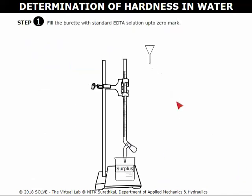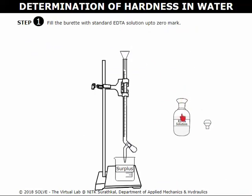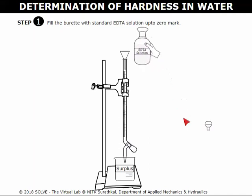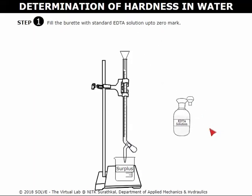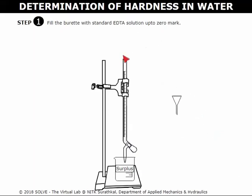Click here to place the funnel into the burette. Open the lid of EDTA solution. Click here to transfer the solution into the burette up to zero mark. Click here to close the lid.